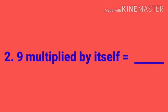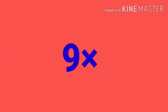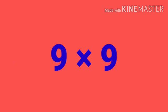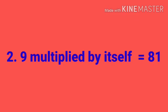Next, number 2: 9 multiplied by itself equals to dash. What is the meaning of 9 multiplied by itself? That means 9 into 9. And 9 nines are 81. So 9 multiplied by itself equals to 81.